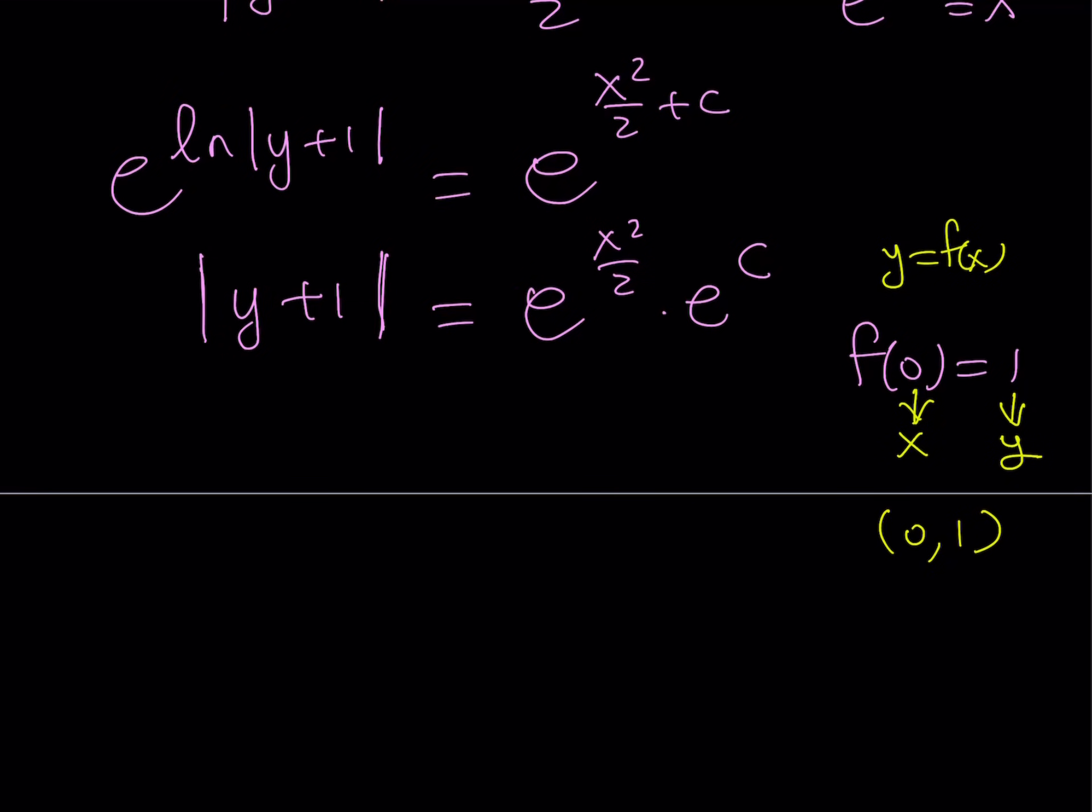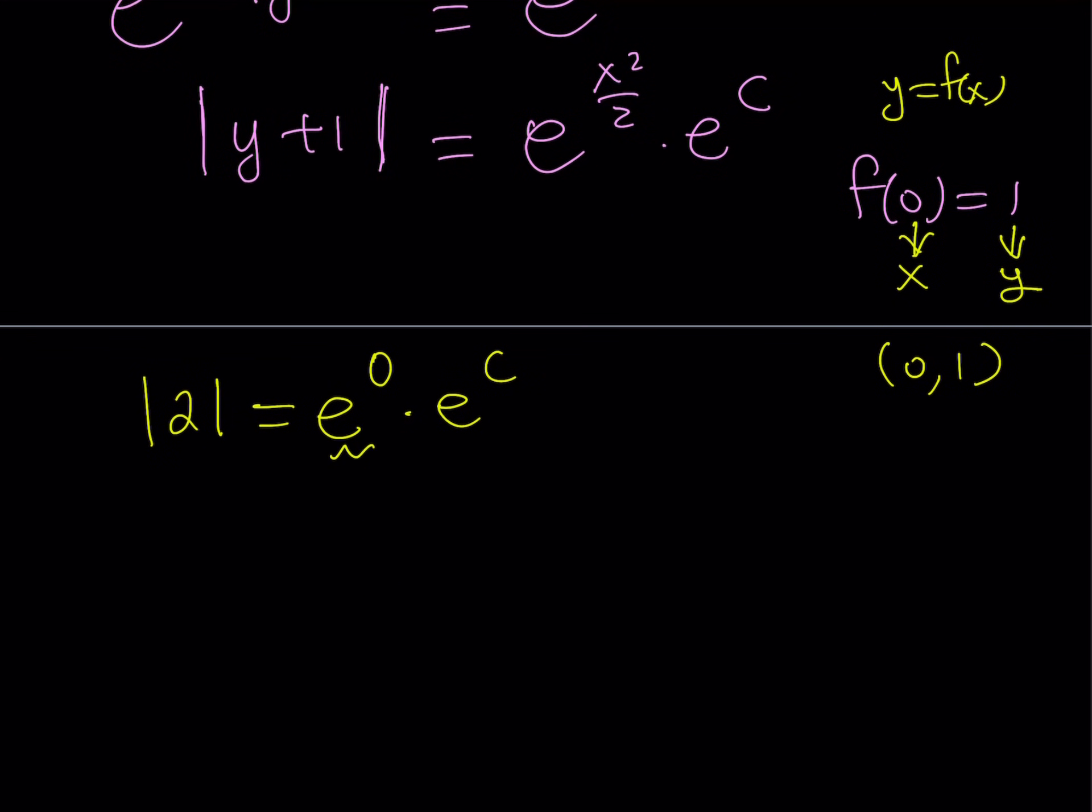Now, we're going to go ahead and substitute it. When we do, replace y with 1, it's going to give us the absolute value of 2, and then e to the power 0 times e to the power c. Great. Now, absolute value of 2 is 2 because 2 is positive. And e to the power 0, as you know, is equal to 1. So, this should give us something like this. e to the power c equals 2. What does that tell you? Well, from here, you can find the value of c.